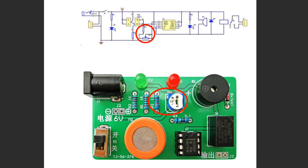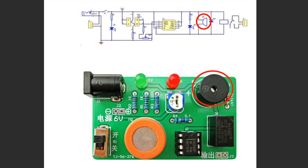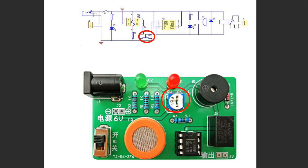When MQ3 detects alcohol vapor, the internal resistance decreases. The voltage of R3 and RW rises, so the voltage of pin 2 of the NE555 becomes higher than the trigger voltage. Pin 3 output goes low level: D2 turns on, the buzzer starts to sound, and the electromagnetic coil in the relay energizes to attract the switch, implementing the detection alarm function. The adjustable resistor RW is used to adjust the detection sensitivity.